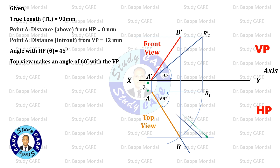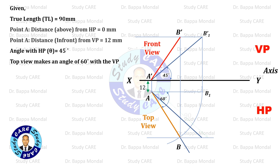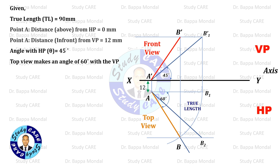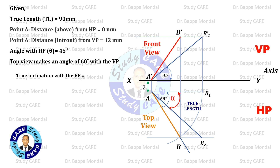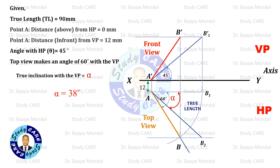Now draw an arc of 90 mm radius from point A. It will intersect the bottommost horizontal locus line — that is the true length. Using a protractor, measure the inclination of this line with the axis. That is the true inclination with the VP. The value of alpha will be 38 degrees.